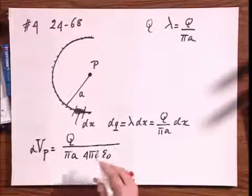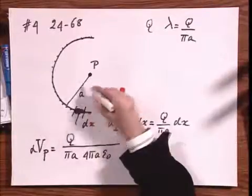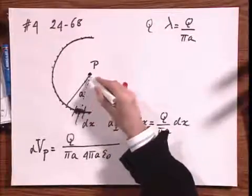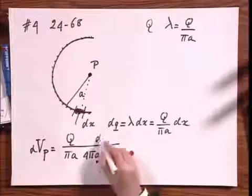Remember 4 pi epsilon zero R, R is the distance from the charge to that point P, we've seen that in our previous problems, so that's why this A is there times DX.